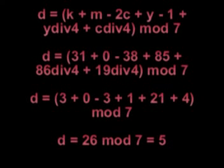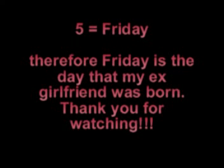Here, you can solve now. D equals 31 plus 0 minus 38 plus 85 plus 86 div 4 plus 19 div 4 modulo 7, equals 3 plus 0 minus 3 plus 1 plus 21 plus 4 modulo 7. D equals 26 modulo 7 equals 5, and 5 is Friday. Therefore, Friday is the day that my ex-girlfriend was born.